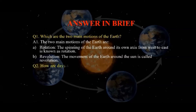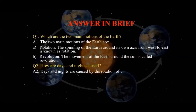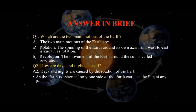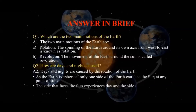Next: how are days and nights caused? Days and nights are caused by the rotation of the Earth. As the Earth is spherical, only one side of the Earth can face the Sun at a time. The side of the Earth that faces the Sun experiences day, and the side that is away from the Sun experiences night.